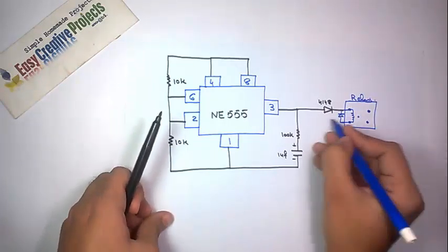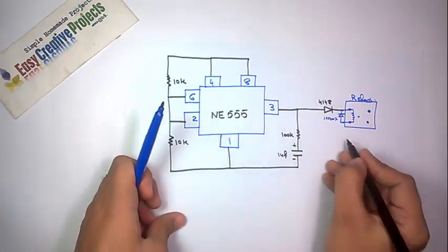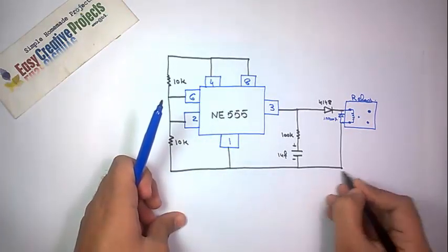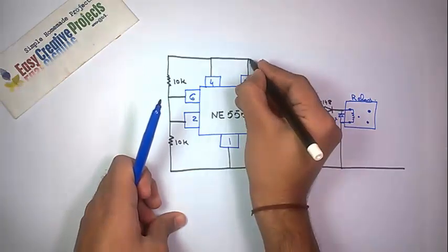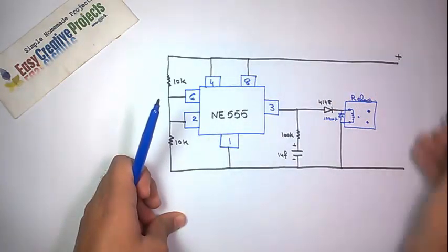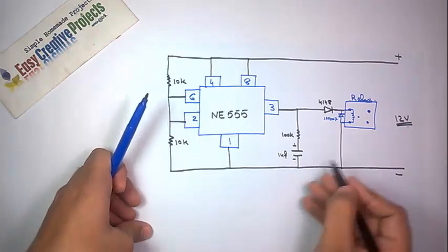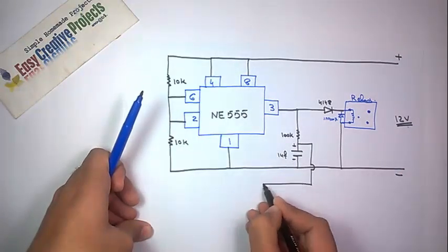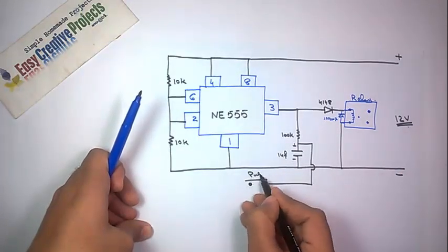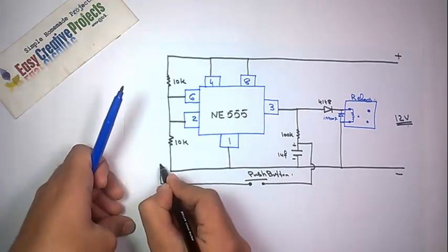Connect the 9V power supply positive to pin 8 and negative to pin 1. Finally, connect the push button between pin 2 and the positive side of the capacitor.